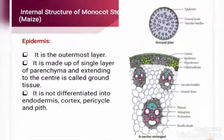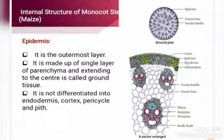Now we are going to discuss about the internal structure of monocot stem. Similar to dicot stem, the epidermis is the outermost layer and is made up of a single layer of parenchyma cells. But the main difference is that the cortex is not divided into three divisions here.